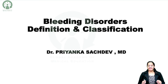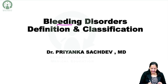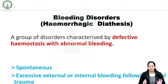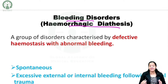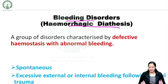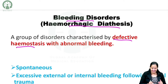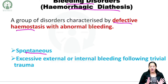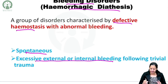In this session, I will be discussing bleeding disorders, its definition and its classification. Bleeding disorders are also known as hemorrhagic diathesis. The problem here is defective hemostasis with abnormal bleeding. The patient will present with spontaneous bleeding, either spontaneous bleeding or excessive external or internal bleeding following a trivial trauma.